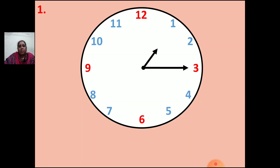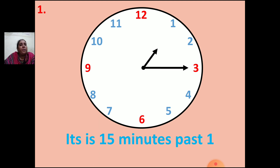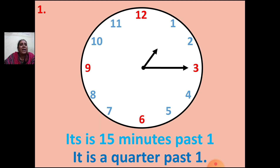Now let us see this clock. The hour hand is between 1 and 2, and the minute hand is pointing to 3. So how many minutes? 15 minutes past 1. This can also be written another way: 15 minutes means it is a quarter past 1. Both ways are correct.